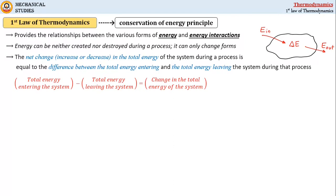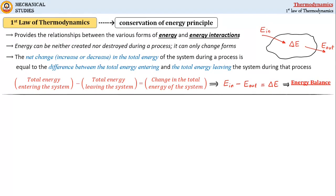This is what conservation of energy simply means. It can be formulated as: energy entering the system (E_in) minus energy leaving the system (E_out) equals the change in total energy of the system (delta E). This expression is called the energy balance, which is applicable to any kind of system undergoing any kind of process. The left-hand side represents energy transfer associated with the system, while the right-hand side represents the energy change of the system.